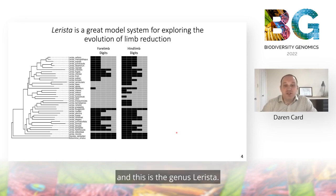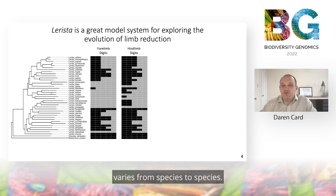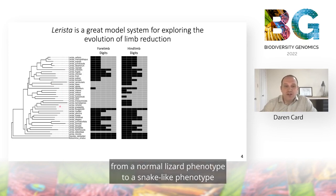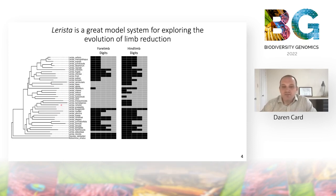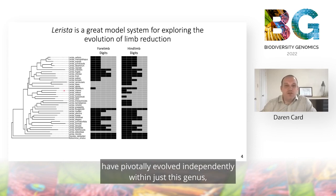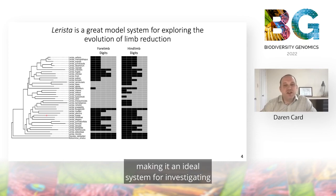This is the genus Larista. Here's a phylogeny of Larista diversity, which shows how limb morphology varies from species to species. We see phenotypes ranging from a normal lizard phenotype to a snake-like phenotype with many intermediate phenotypes in between. As you can see, some of these phenotypes have evolved independently within just this genus, making it an ideal system for investigating the genomic basis of convergent limb reduction.